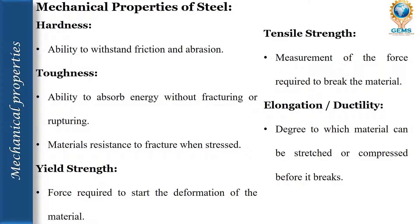The mechanical properties of steel are topics everyone must know in steel structures. Hardness is defined as the ability of a material to withstand friction and abrasion. Toughness is the ability of a material to absorb energy without fracturing or rupturing, or a material's resistance to fracture when stressed. Yield strength is the force required to start the deformation of a material. Tensile strength is the measurement of the force required to break the material.